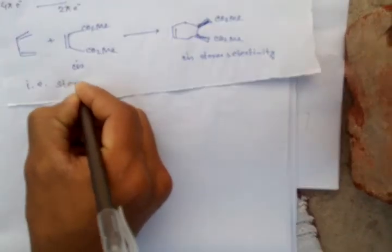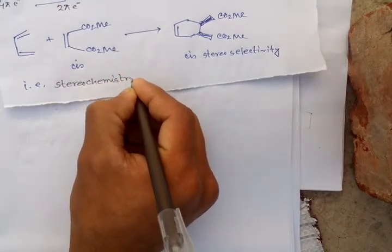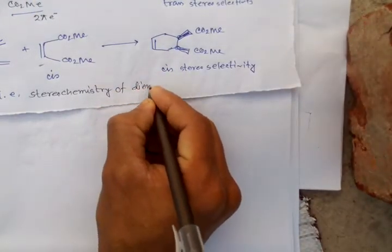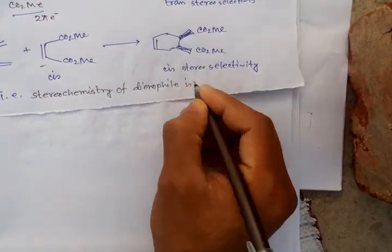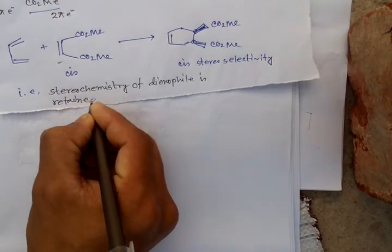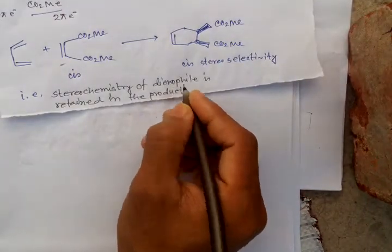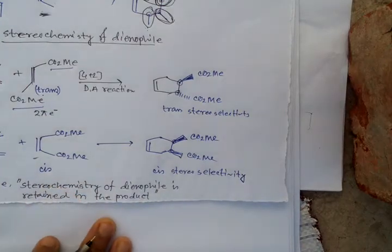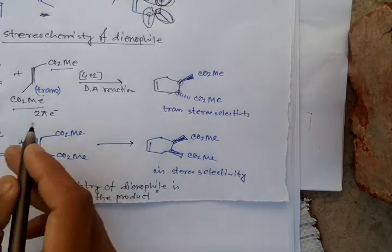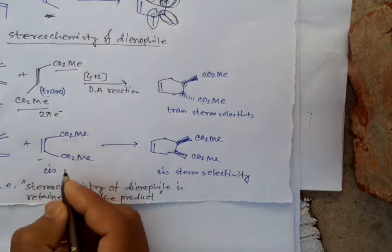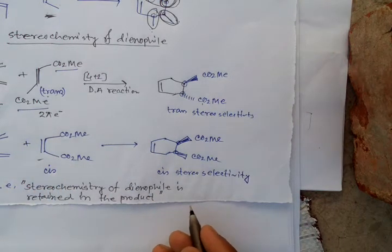So we can conclude that the stereochemistry of the dienophile is retained in the product. Here if it is a trans dienophile, the product will have trans stereoselectivity. And here if the dienophile is cis, the product will have cis stereoselectivity — a cis product.